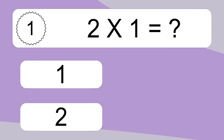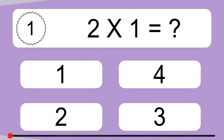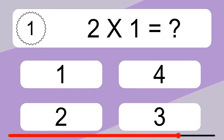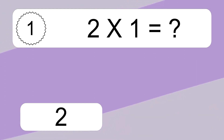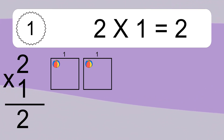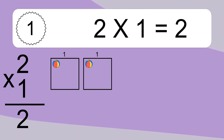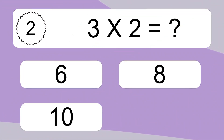2 times 1 equals what? 2 times 1 equals 2. We have 2 boxes, and each box has 1 colorful ball inside. If you count all the balls in all the boxes together, you will have 2 times 1 balls. This equals 2 balls.